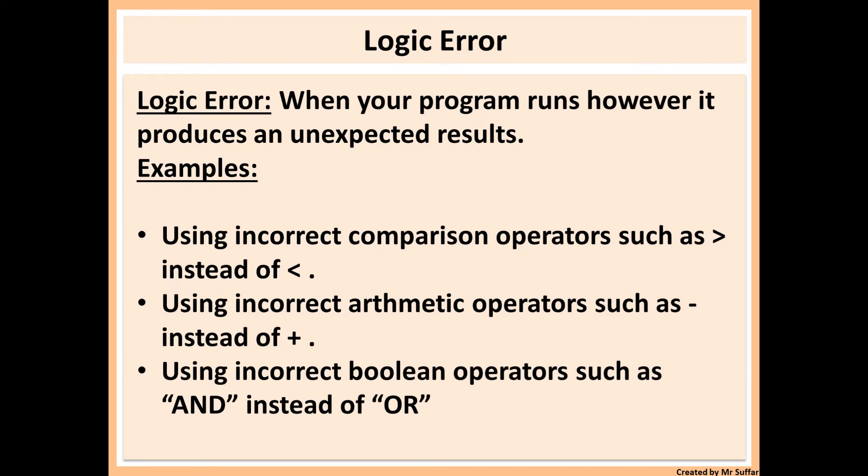Or when you use an incorrect arithmetic operator. So if you want to multiply two numbers together but then use the division sign instead of the multiplication sign, your program will still run. It will just divide two numbers together rather than multiply, which means it will give you an incorrect or unexpected result. And it also happens if you use the incorrect boolean operators. For example, you might use AND instead of OR. If you do that you will also get a logic error because your program will still run, however it will give you an incorrect result.